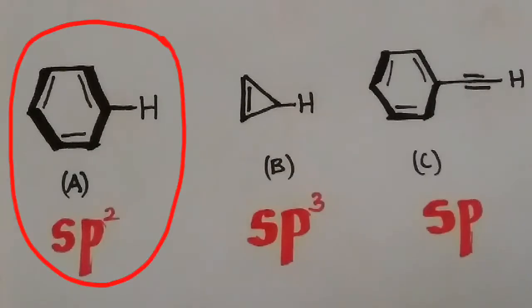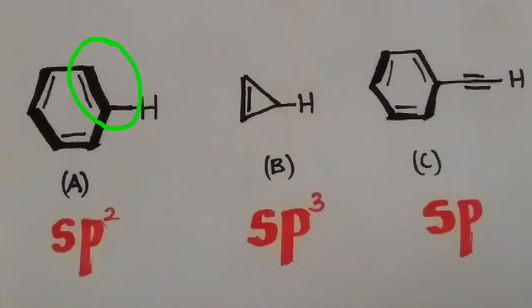In option A, since there is a double bond, the hybridization is SP2. In molecule B, since there are single bonds, the hybridization is SP3. In molecule C, since there is a triple bond, the hybridization is SP.